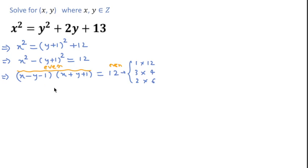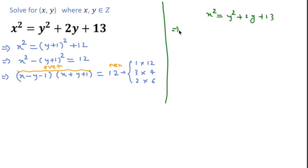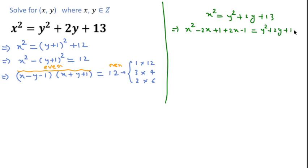So instead, I will rewrite the equation as x squared equals y squared plus 2y plus 13. We can expand this as (x minus 1) squared plus 2x minus 1 and rearrange. Also, 13 can be written as 1 plus 12.